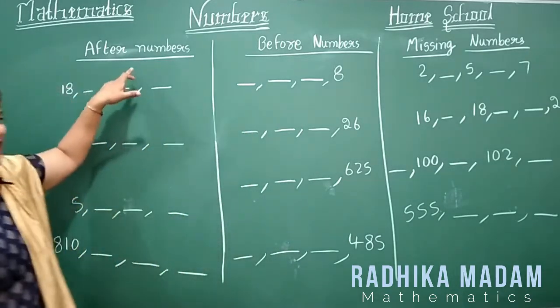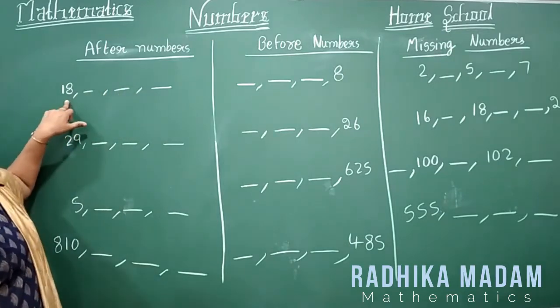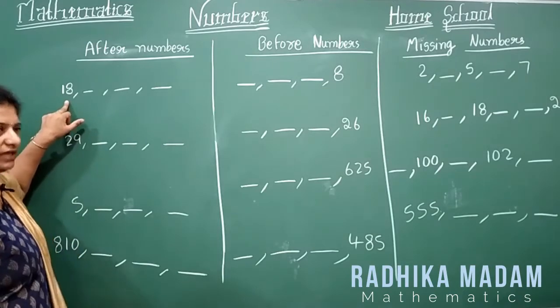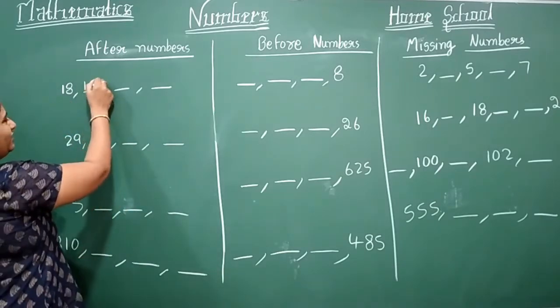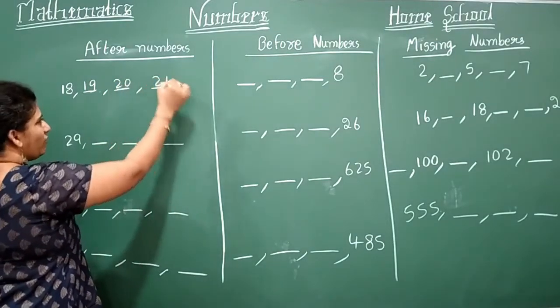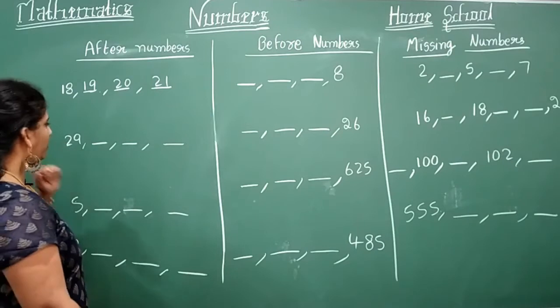So look here children, after numbers. After 18, what do you get here? Just think over in your mind. After 18, you will get 19, 20, 21. The next numbers we are seeing, right? So look here.